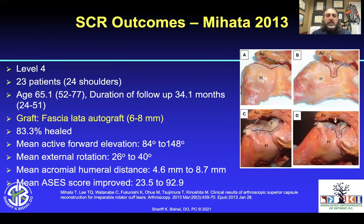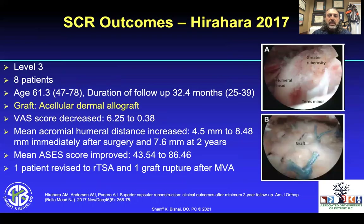In Mahata's work from 2013 — a level four study, 23 patients — his graft was about 6 to 8 millimeters thick with 83% healing. He saw increases in active forward flexion and external rotation, increased acromial-humeral distance, and significantly increased ASES scores. Hirahara in 2017 had only 8 patients using a 3-millimeter acellular dermal graft — VAS scores came down with slight increases in range of motion and acromial-humeral distance, though ASES scores came down. One patient was revised to a reverse; this study is weak given its sample size.